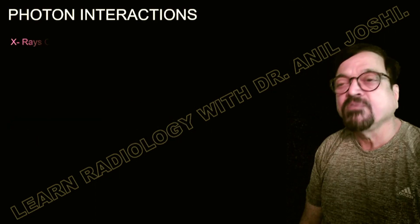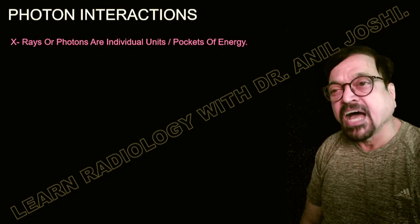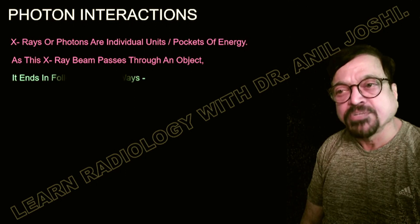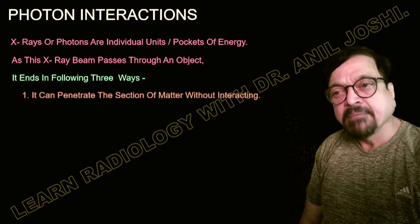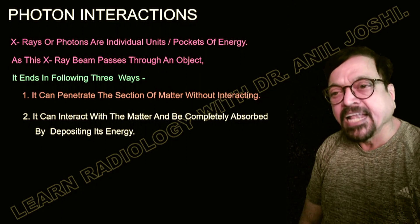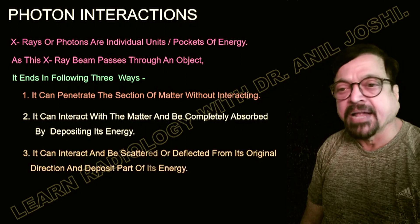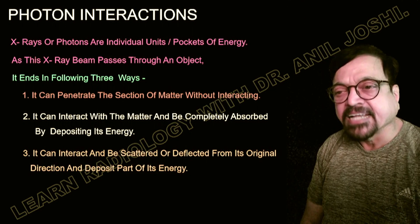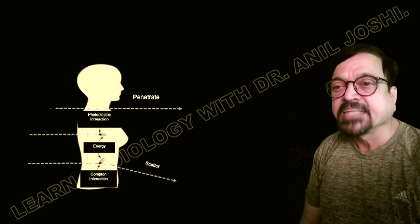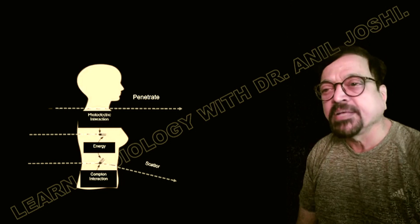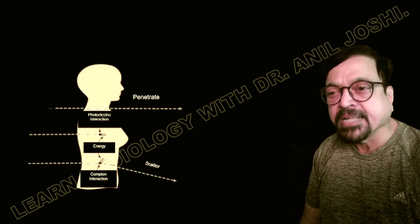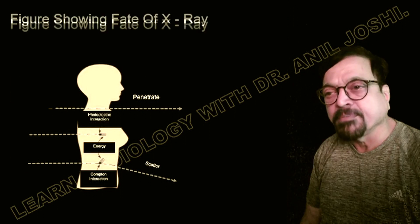X-rays or photons are individual units or packets of energy. As an x-ray beam passes through any object, it ends in one of three ways: it can penetrate the section of matter straight through without any interaction; it can interact with the matter and be completely absorbed by depositing its energy; or it can interact and be scattered or deflected from its original direction, depositing part of its energy. These three outcomes — total absorption, transmission, or partial absorption — all contribute to image formation.